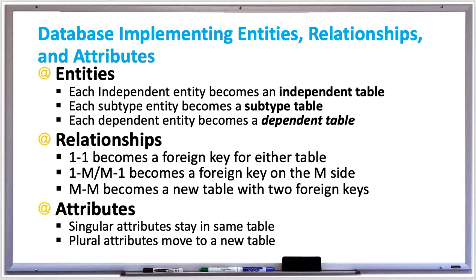A dependent entity becomes a dependent table. The primary key is typically composite, which includes a foreign key that references the master table's primary key. If there's not a suitable column when creating the composite primary key, you can create and use an artificial column.